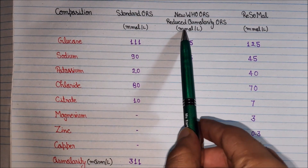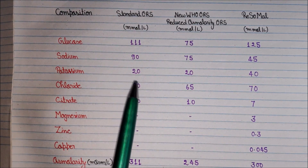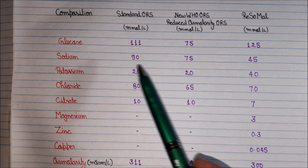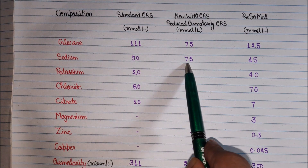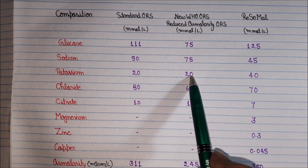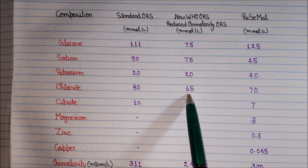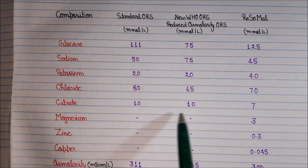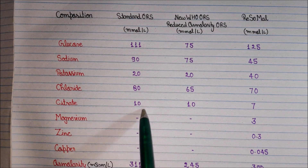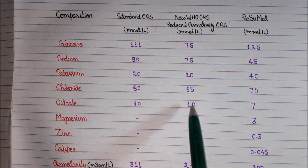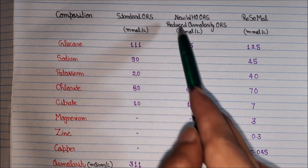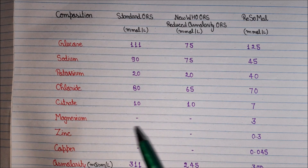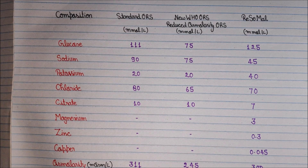The currently used solution is the reduced osmolarity ORS. Its composition is: glucose at 75 mmol/L, sodium at 75 mmol/L, potassium at 20 mmol/L, chloride at 75 mmol/L, and citrate at 10 mmol/L. The citrate concentration is common between standard and new WHO ORS. The total osmolarity is 245 mmol/L, which is why it is known as the reduced osmolarity ORS.